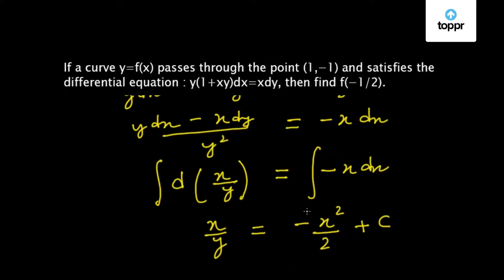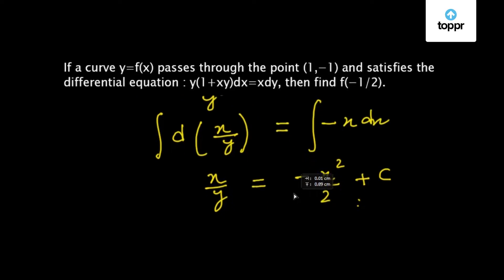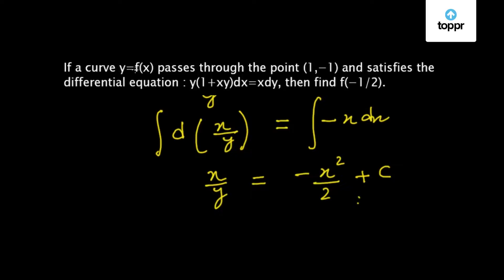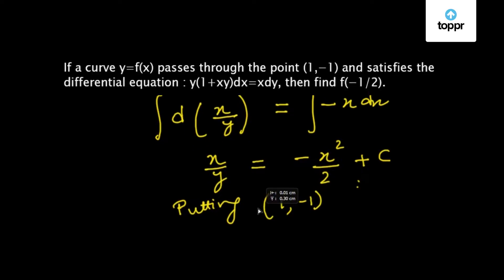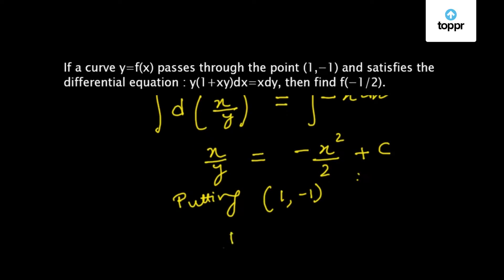So now we have found the curve y = f(x) from the differential equation y(1 + xy)dx = x dy. It is given that this curve passes through the point (1, -1). So let us substitute (1, -1) in this equation. Putting x = 1, y = -1, we get 1/(−1) = −1/2 + c.